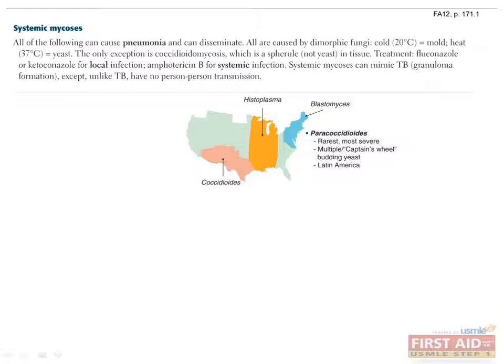Also pay attention to the characteristic shapes that distinguish each of the fungi, which we will show you additional pictures of. All four of these fungi share some general properties — they are all dimorphic, meaning they can exist in two different forms depending on temperature. At cold temperatures of 20°C they exist as molds, while at hotter temperatures of 37°C they exist in yeast form. Therefore, when we take biopsies of areas infected by these fungi, we will be looking for their yeast forms because they have been growing at body temperature.